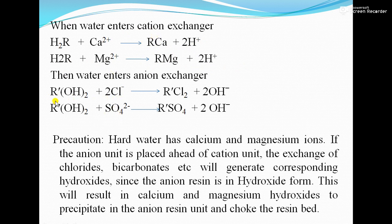Similarly, anions get exchanged in the second compartment. The OH⁻ in R(OH)₂ is replaced by Cl⁻, and similarly OH⁻ is replaced by SO₄²⁻, giving R(SO₄). Precaution: if the anion unit is placed ahead of the cation unit, the exchange of chlorides, bicarbonates, etc. will generate corresponding hydroxides. Since the anion resin is in hydroxide form, this will result in calcium and magnesium hydroxide precipitates in the anion resin unit, choking the bed.